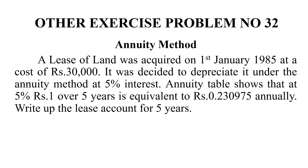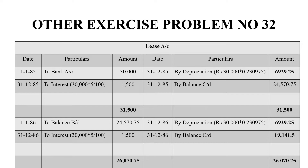In the problem, on 1st January 1985, they purchased a lease asset for 30,000 rupees, so the bank account is debited with 30,000. That 30,000 is the business cost — this goes on the debit side. We are also paying interest to the investor: 30,000 at 5% gives 1,500 rupees. So the total on the debit side is 31,500.